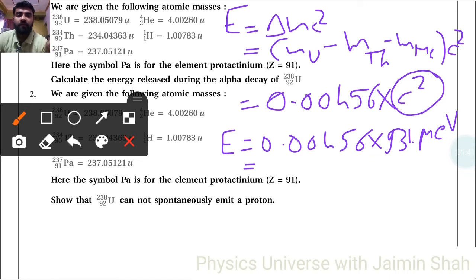So into 931.5, actually here 0.5 is also there, so answer is 4.247 mega electron volt. So this is the energy, this energy is called binding energy of our system.